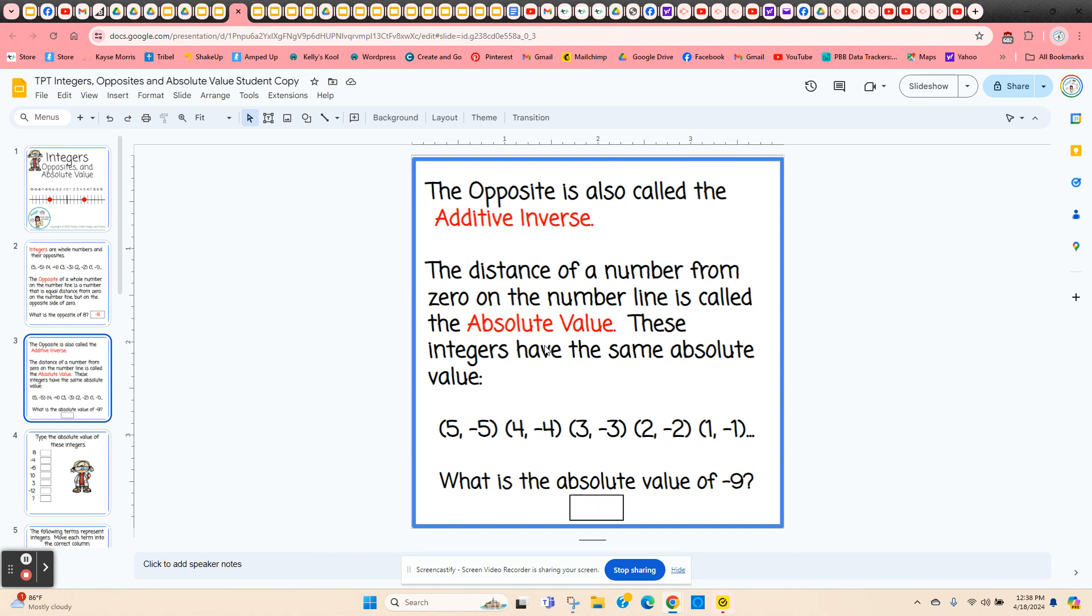And then you introduce absolute value. Absolute value is the distance of a number from zero on the number line. It's always a positive value. So all of these numbers have the same absolute value: five and negative five, four and negative four, and so on.